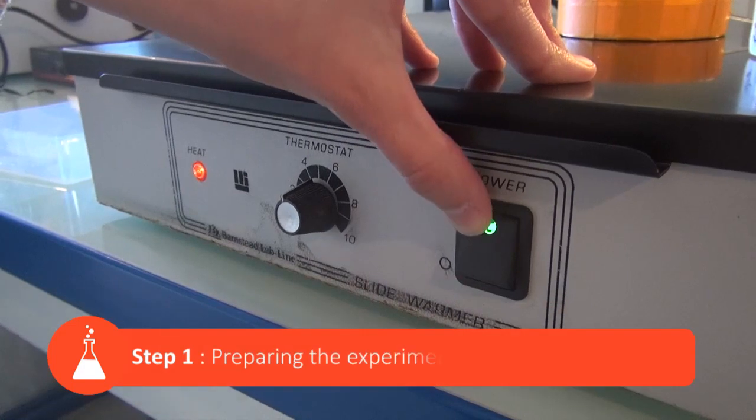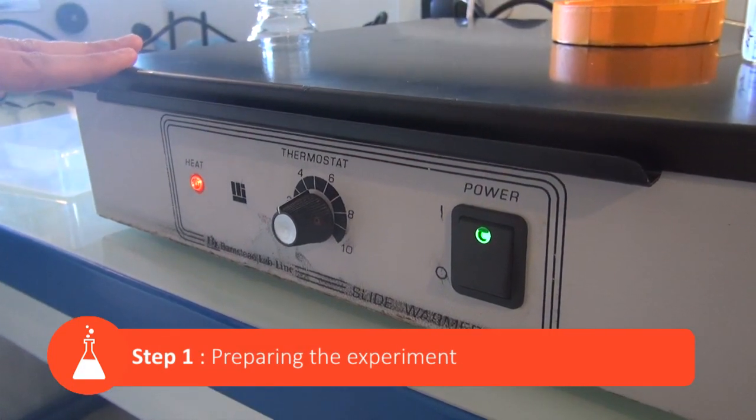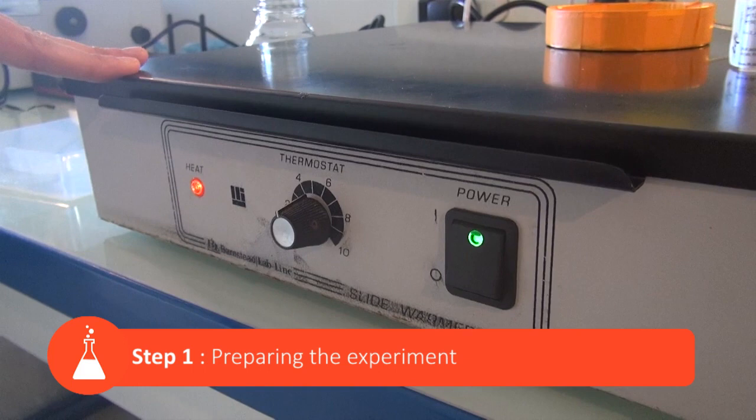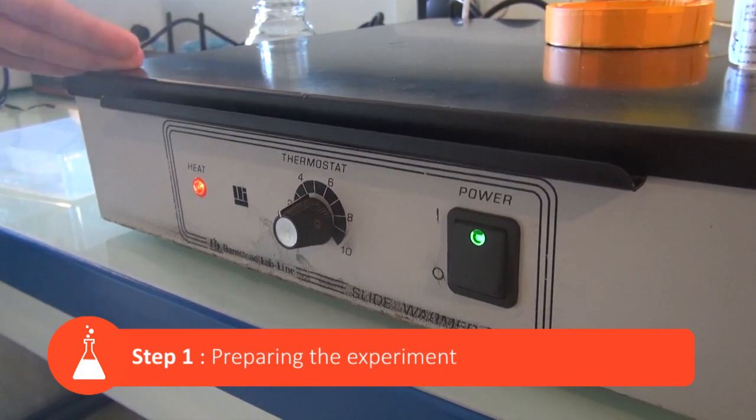To do this, we start by switching on a hot plate which will maintain brain sections at a temperature of 30 to 32 degrees Celsius during incubation.